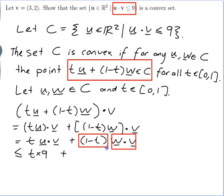So I'm still allowed to say that that's (1-t) times 9 because all of this is less than or equal to all of this.